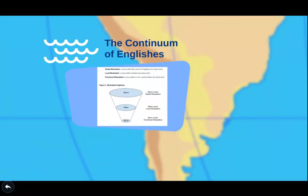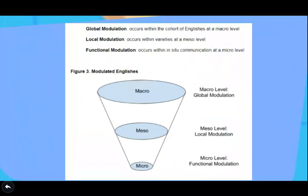Next, we're going to look at the continuum of Englishes. We're going to look at three different levels — the macro, meso, and micro levels — which correlate to global modulation, or the entire cohort of Englishes around the world; local modulation, which are the regional varieties; and functional modulation, which is in-situ communication.